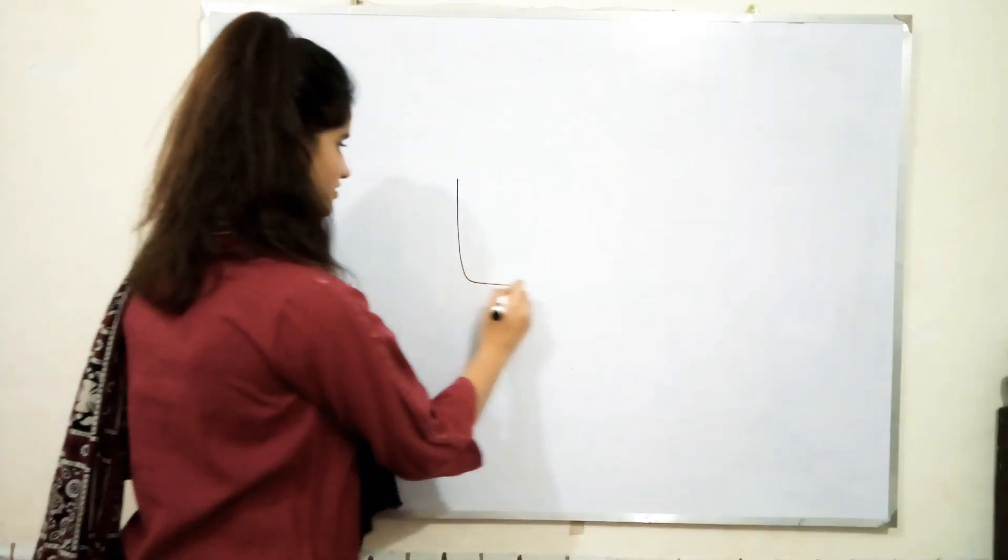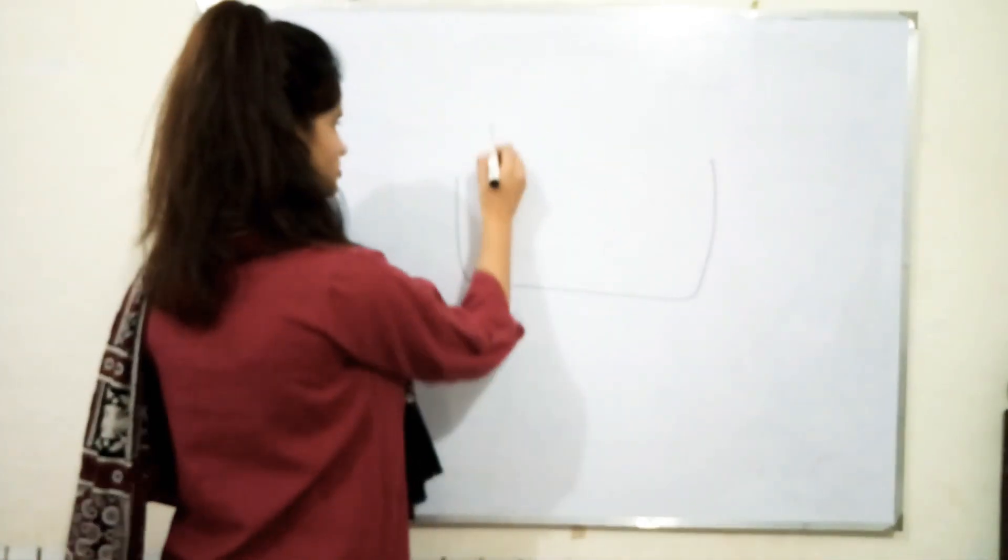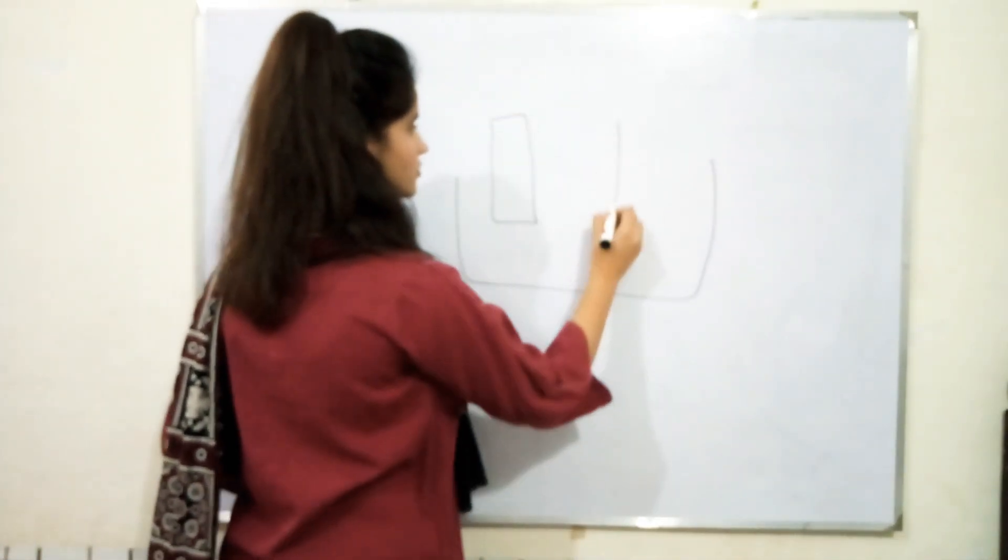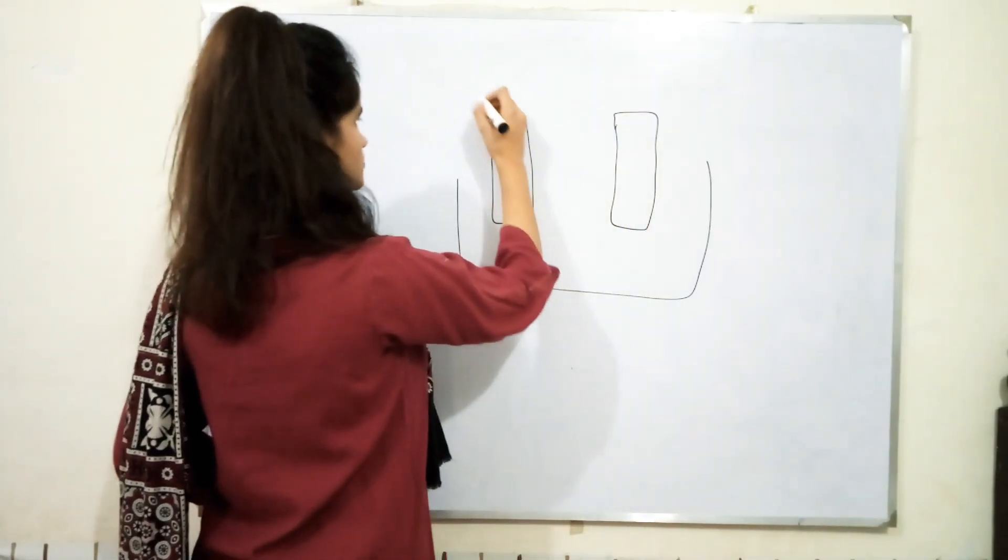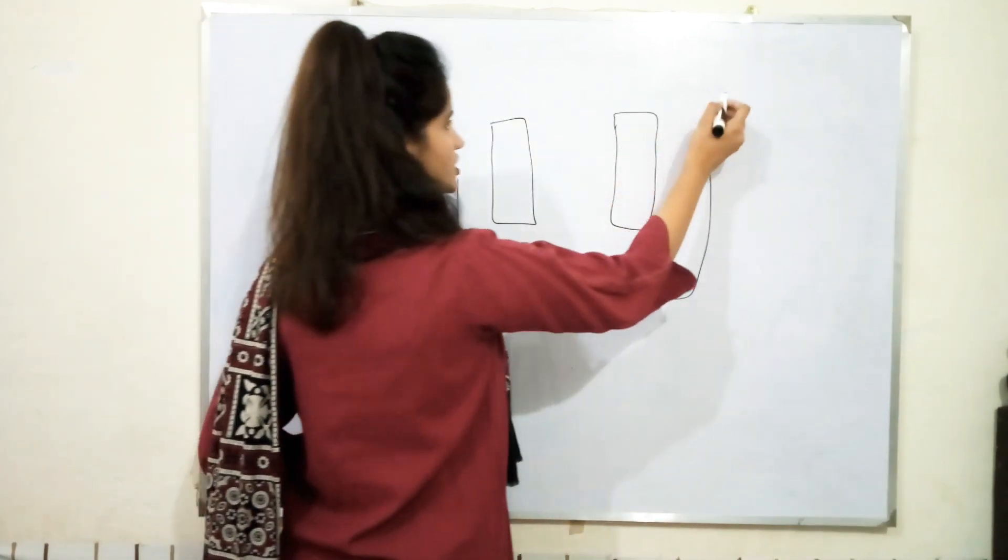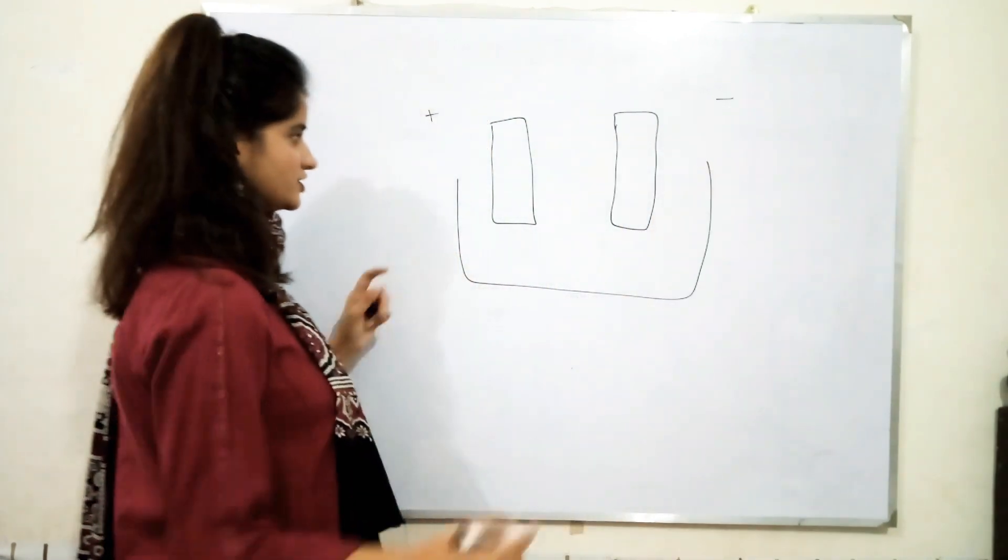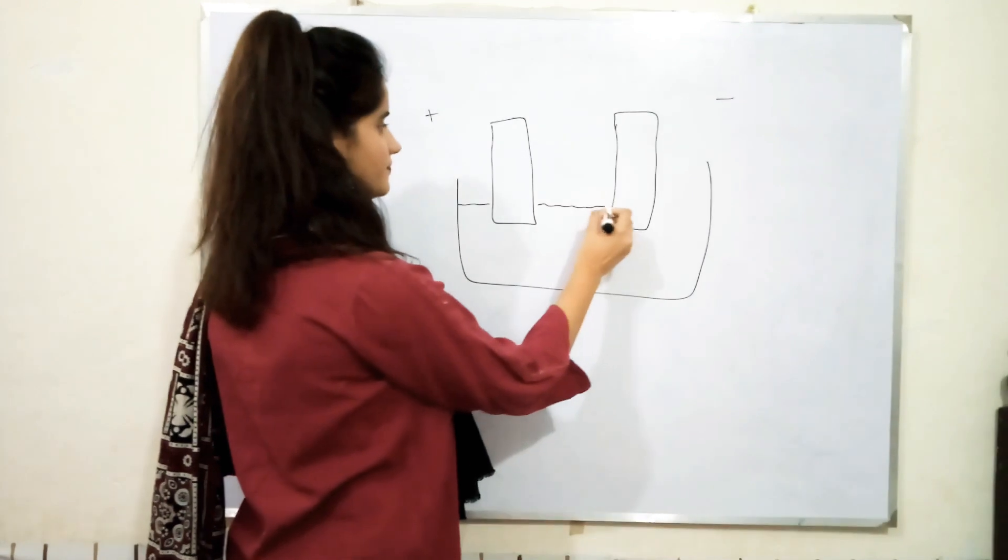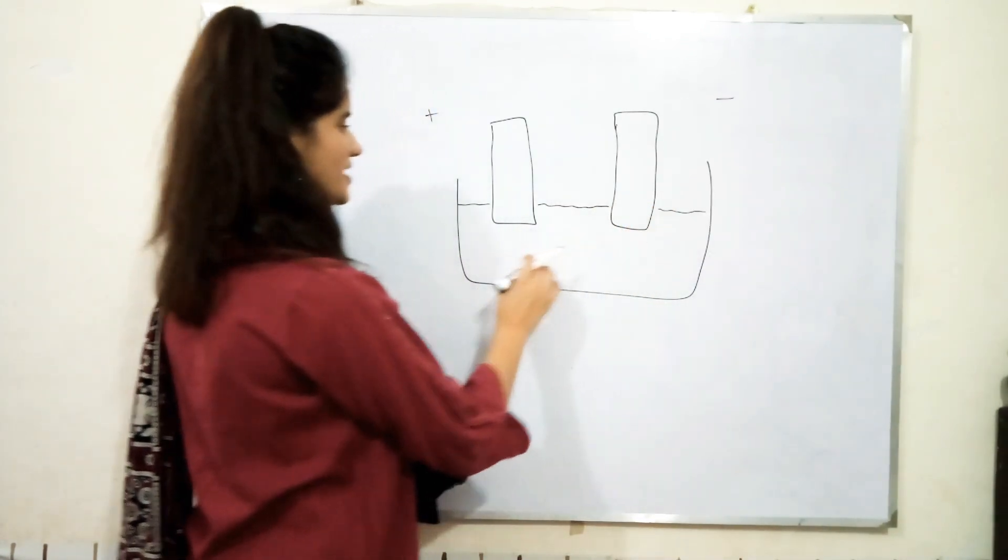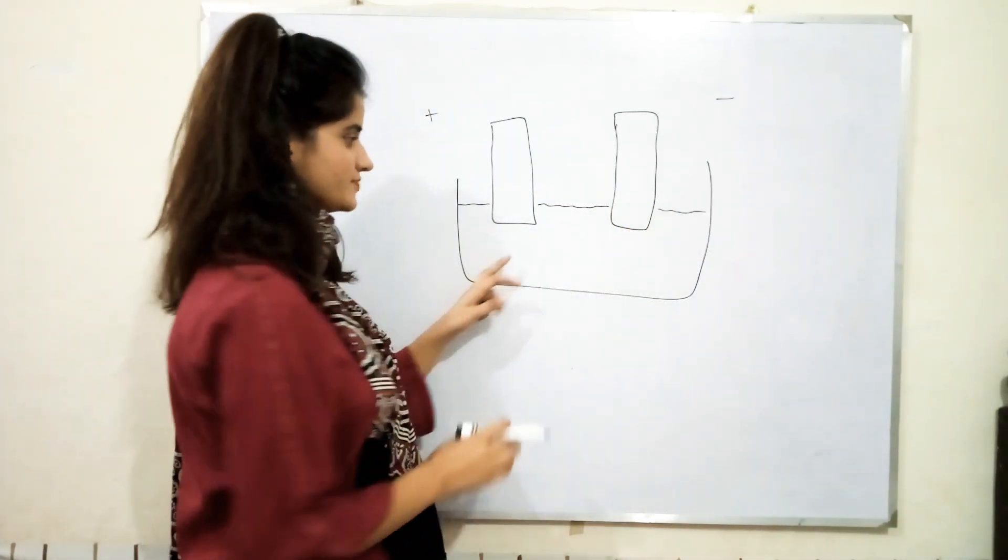In that process, the electrolyte which is present, for example, this is a voltmeter in which two electrodes are present. This one is an anode having positive charge and this one is a cathode having negative charge. And inside, these electrodes are partially dipped in an electrolyte.